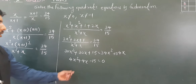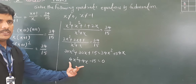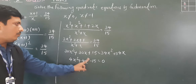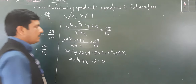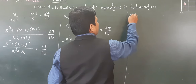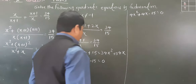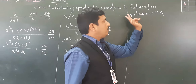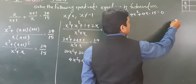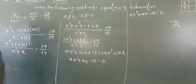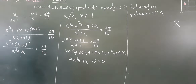We have the quadratic equation 4x² + 4x − 15 = 0. Now we factorize by splitting the middle term. We need to find factors of (minus 15 × 4 = minus 60) whose sum is plus 4. Let's find which pair we can use.